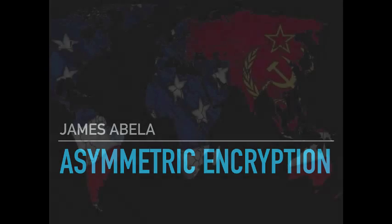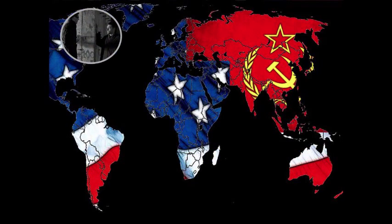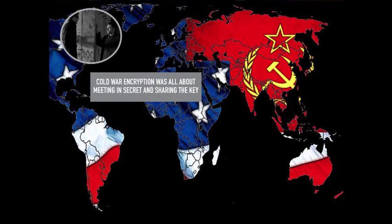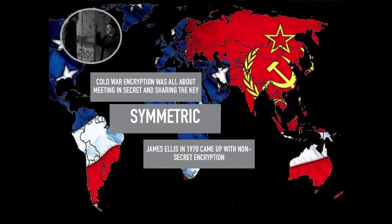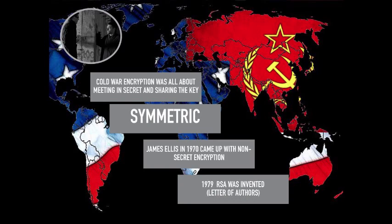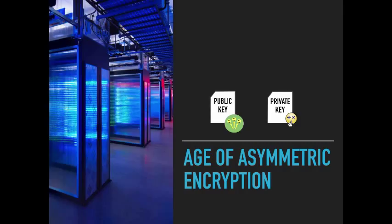Asymmetric encryption. In the old days, encryption was all about meeting in secret and sharing the key — it was symmetric. James Ellis in 1970 came up with non-secret encryption. By 1979, RSA was invented. And then we have the age of asymmetric encryption.